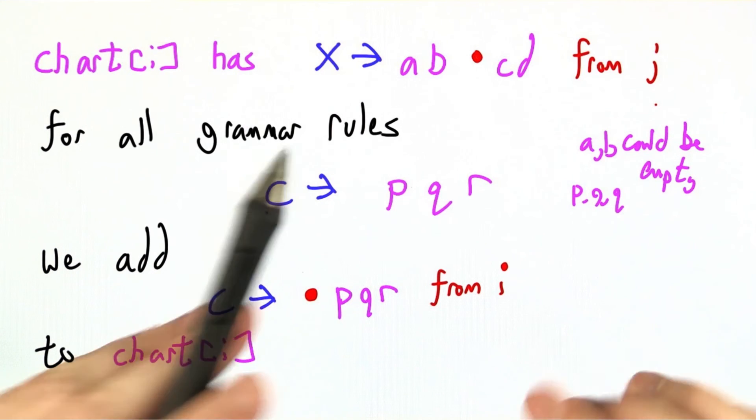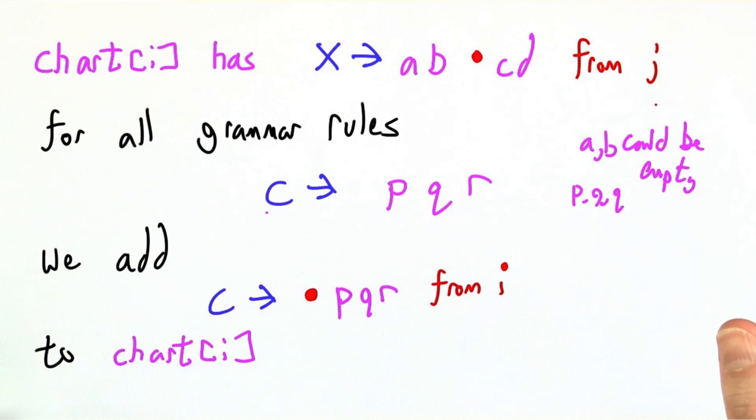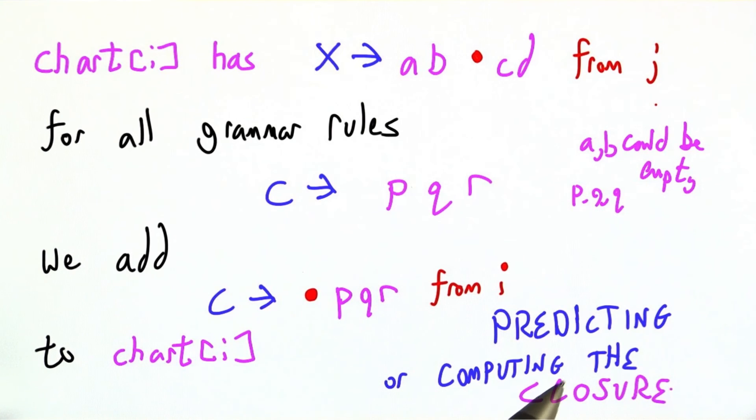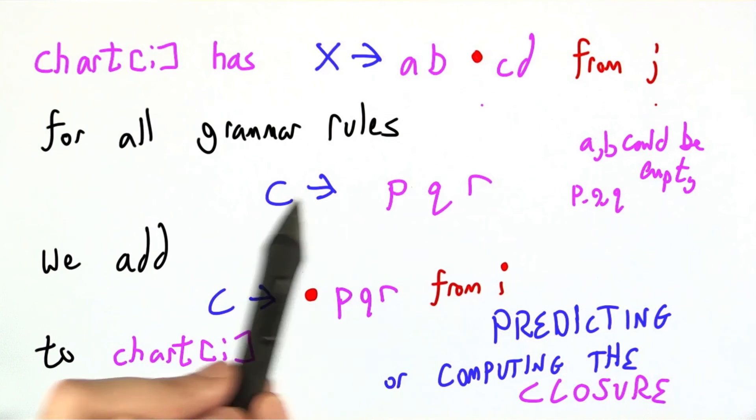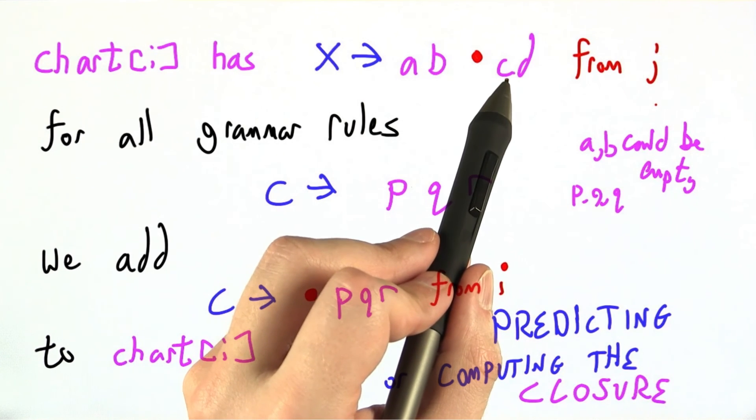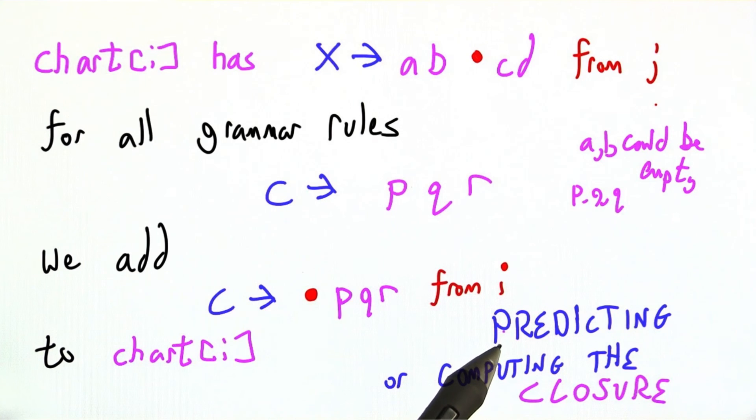If there are five grammar rules that start with a C, we're going to add five things to chart I. Formally, this operation of bringing in everything that C could become, because we're expecting to see a C, is known as predicting.